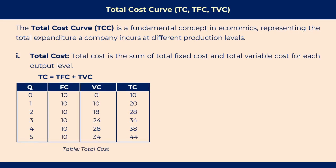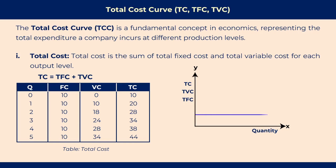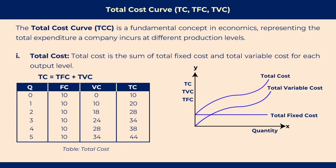Here is a table for total cost. To draw the graph, we take quantity on the x-axis and cost on the y-axis. The fixed cost is parallel to the x-axis and variable cost is derived from the origin. The total cost curve is derived from the point of total fixed cost on the y-axis.